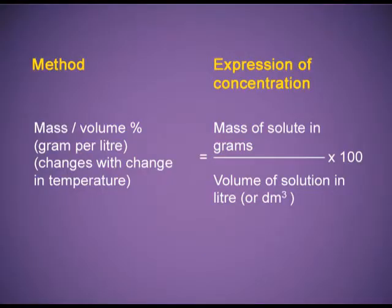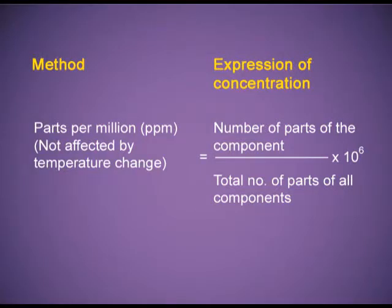The third way is mass per volume percentage, normally used in pharmacy: mass of the solute in grams divided by total volume of the solution, multiplied by 100. Parts Per Million is used when the solute is present in very minute quantities — for example, fluoride ions added to water supply to prevent tooth decay. It is the number of parts of the component divided by the total number of parts of all components, multiplied by 10 raised to power 6.